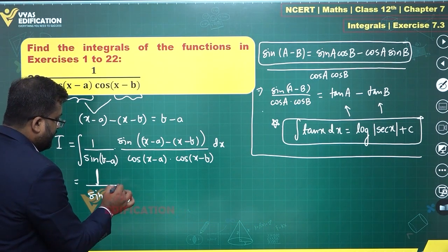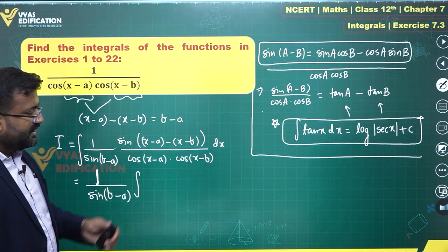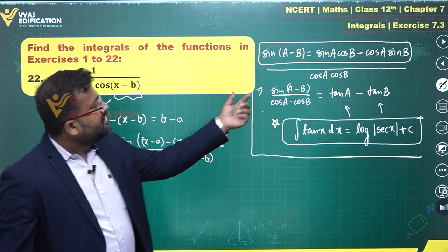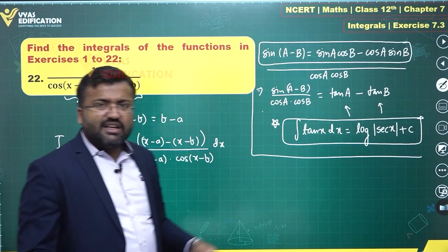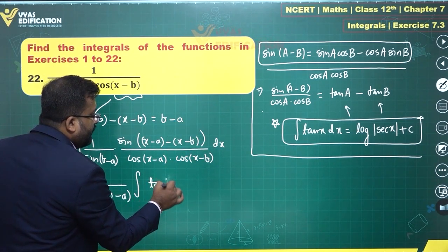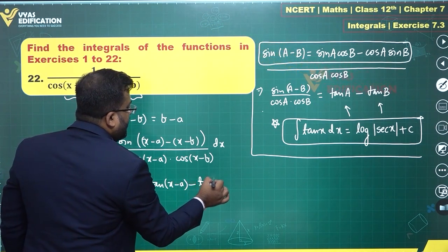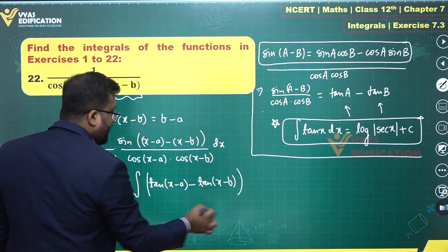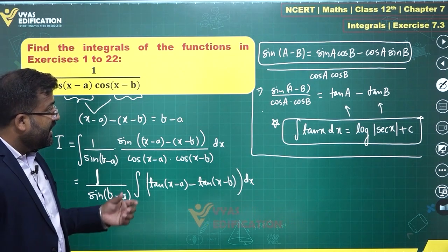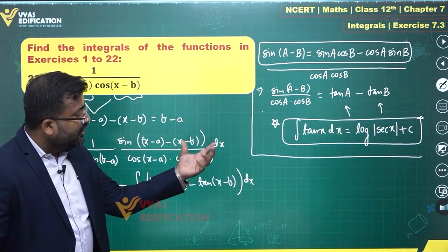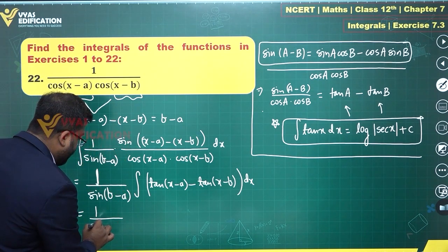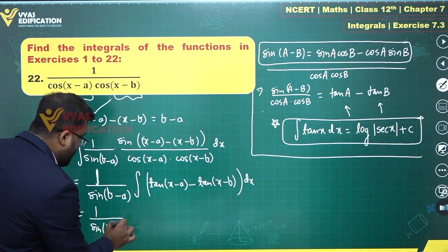Now, sin(a - b) / (cos(a)·cos(b)) expands to tan(a) - tan(b). Applying this here, the integrand becomes tan(x - a) - tan(x - b). Integrating each term: the integral of tan(x - a) is log|sec(x - a)|, and the integral of tan(x - b) is log|sec(x - b)|.